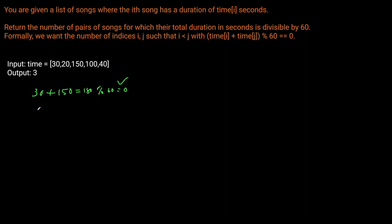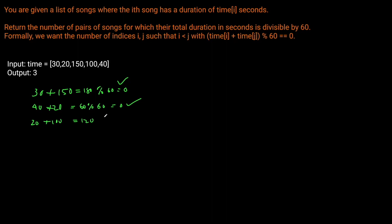So that's one answer. Another is 40 plus 20, which gives us 60 — modulo 60 is zero. And the third is 20 plus 100, giving us 120, which modulo 60 also equals zero.